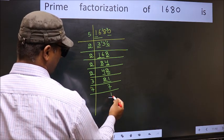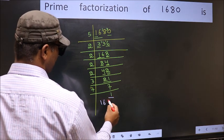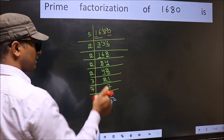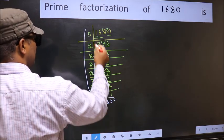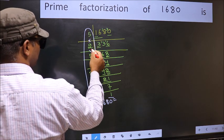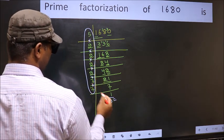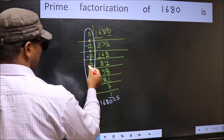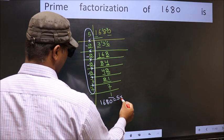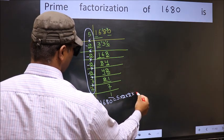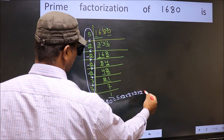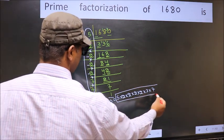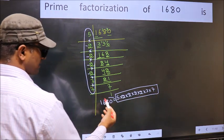So we got 1 here. So the prime factorization of 1680 is the product of these numbers. That is 5, and how many times do we have 2? 1, 2, 3, 4. Into 2, into 2, into 2, into 2, into 3, into 7. This is the prime factorization of 1680.